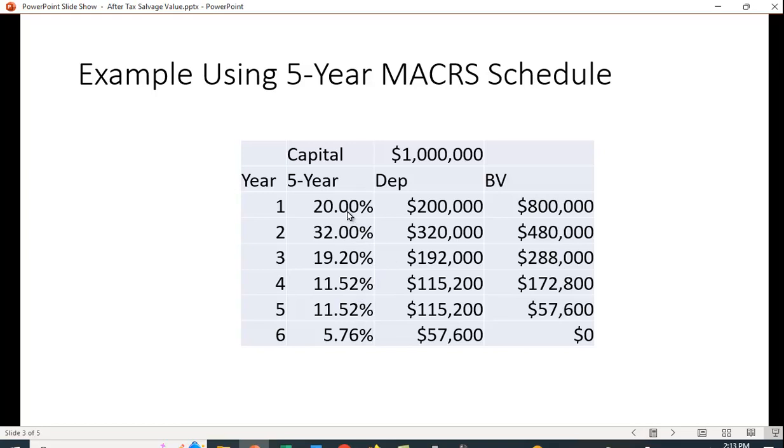How do you calculate it? It's just the rate times the capital expenditure. So 20% of a million is $200,000 and 32% times the original capital outlay of a million is $320,000.